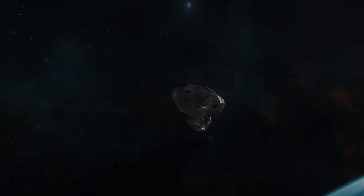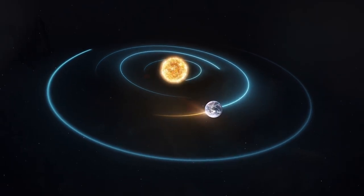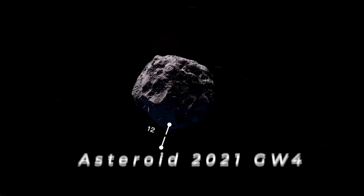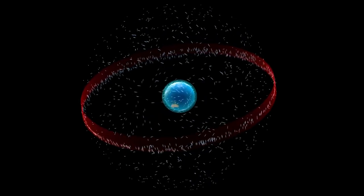But this year, Earth was nearly in the exact right place at exactly the right time. Or perhaps the wrong time. Asteroid 2021 GW4 grazed a mere 12,000 miles above the surface of the Earth. That's much closer than the orbit of geosynchronous satellites.